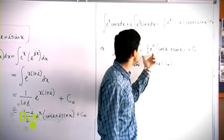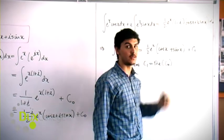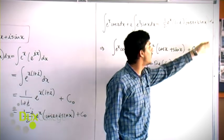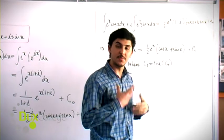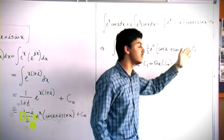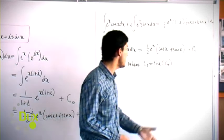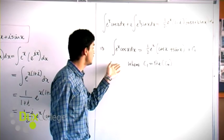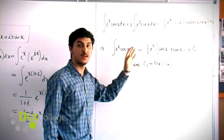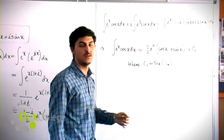So we have (1/2)e^x(cos x + sin x) as our real part on the right-hand side. We need to take the real part of C₀ as well, letting it equal C₁. Thus, the integral ∫e^x cos x dx equals (1/2)e^x(cos x + sin x) + C₁.